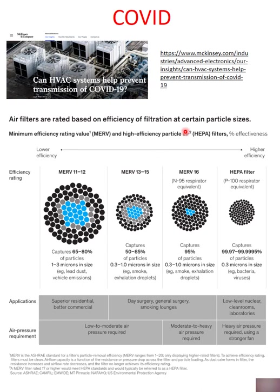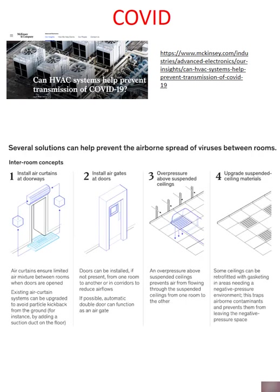Cloth masks versus the KN95s or N95s. And then HEPA filters — you don't see those in face masks, but this would be in a building for the best filtration. More on COVID and design specifications for buildings and recommendations.